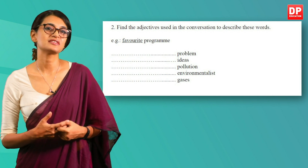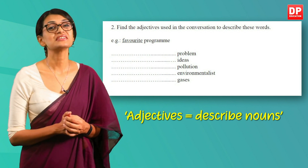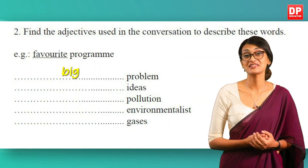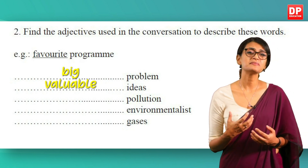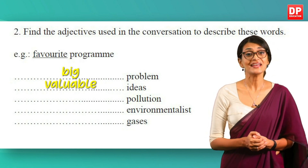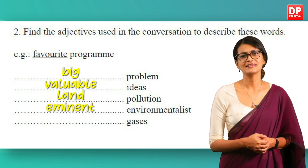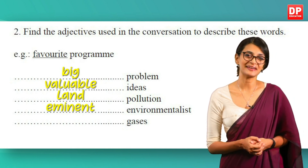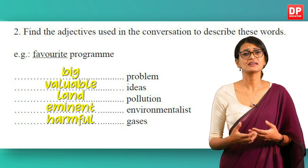Let's look at the next question: find the adjectives used in the conversation to describe these words. Remember, adjectives describe a noun. The first one is done for you — big problem. After reading this interview, we realized that pollution is a big problem. The next one is valuable ideas — we are told that Mr. Veera Singer will share some valuable ideas. The next one is eminent environmentalist — we are informed at the beginning that Mr. Sunil Veera Singer is an eminent environmentalist. The final adjective to fill in is harmful — polythene creates a lot of harmful gases.